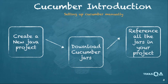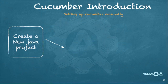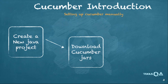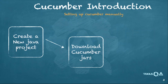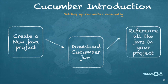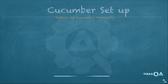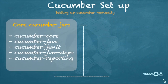We have successfully done our first step, which is creating a new Java project. Now let us move on to the next step, which is downloading Cucumber jars. Cucumber jars can be categorized into two forms. The first one is the Cucumber core jars — the core Cucumber binaries that you require. These are: Cucumber core, Cucumber Java, Cucumber JUnit, Cucumber JVM, and Cucumber reporting.